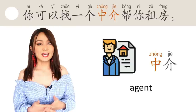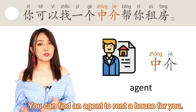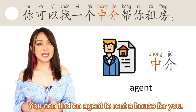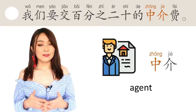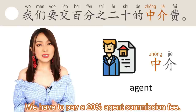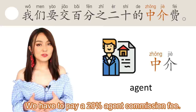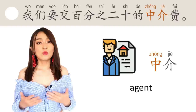OK，下一个：中介。 中介 means intermediary or agent. 你可以找一个中介帮你租房。 You can find an agent to help you rent an apartment. 我们要交20%的中介费。 We need to pay a 20% agent fee.